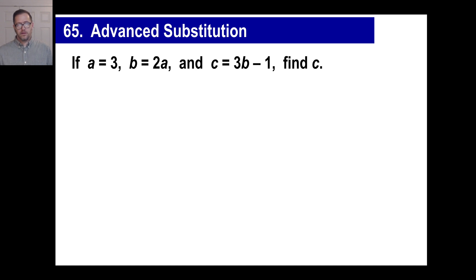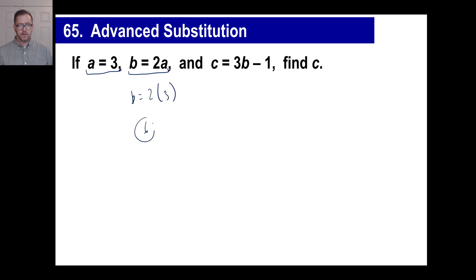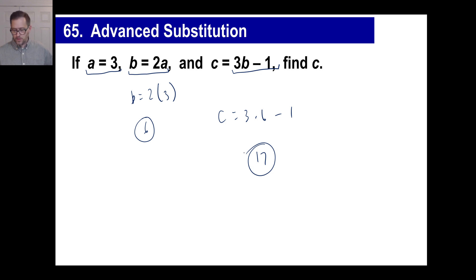You're just going to do a couple of substitutions and keep going until you're done finding C. If A is 3, that tells you B equals 2 times 3, or 6. So they tell you C is 3B minus 1 — that's 18 minus 1, or 17. That is essentially this lesson. That's all we're doing.